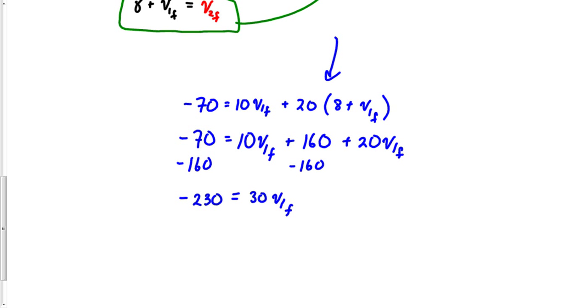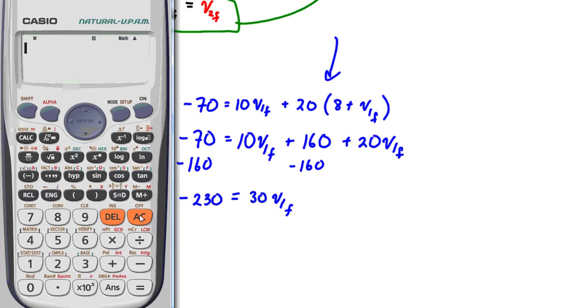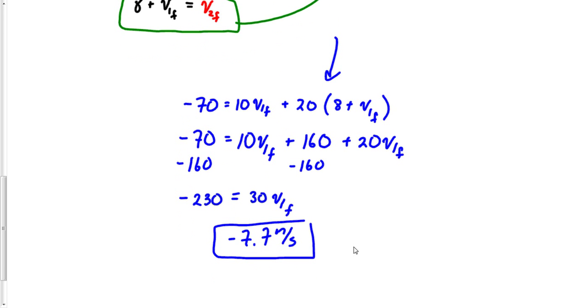And now we'll go to our Casio ES 115 calculator. You know my show really should be sponsored by Casio. Negative 230 divided by 30 equals negative 7.7 essentially. So I'm going to go ahead and write negative 7.7 which is my v1 final.